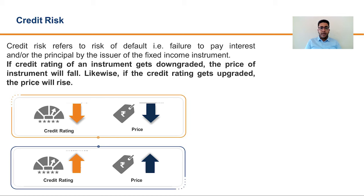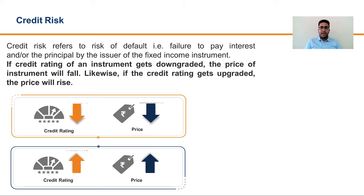How does an investor assess that risk? To assess credit risk, we look at the credit rating of the portfolio or the credit rating of the instruments where the portfolio has invested. Unlike interest rate risk where there was an inverse co-relationship between interest rate and price, in terms of credit rating there is a direct relationship between credit rating and the price of the instrument. If your credit rating goes down, the price of the instrument also goes down, and vice versa. In layman terms, one can equate the credit rating to the quality of a product.